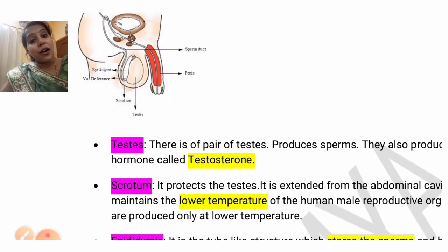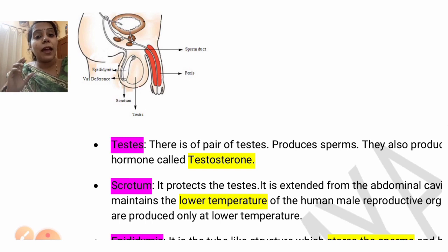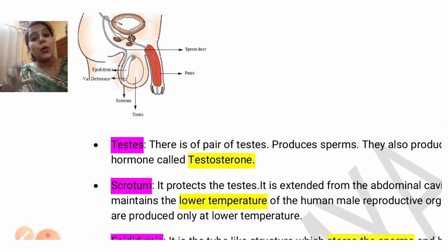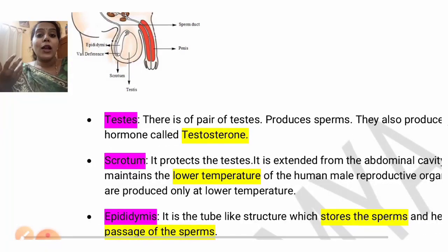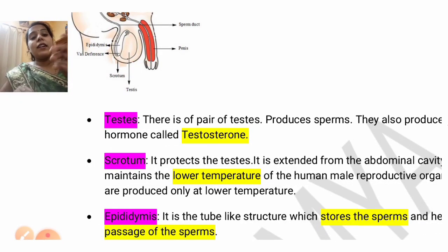First, to write the function, you should know the parts. You can write the function using your mind mapping — you can write the functions very easily. First, let's talk about testes.